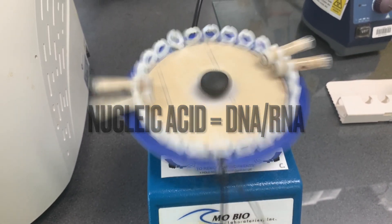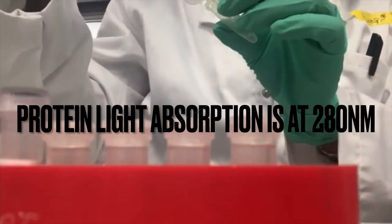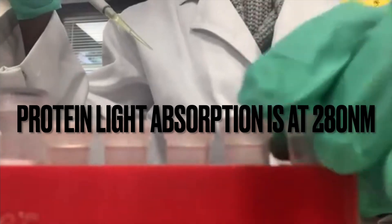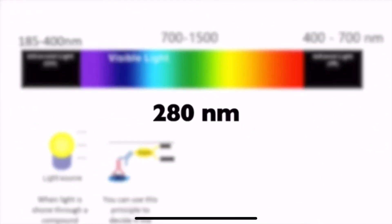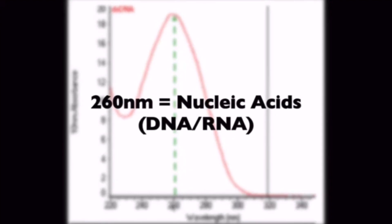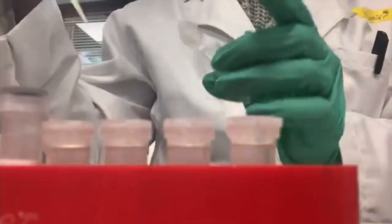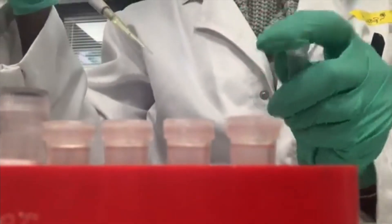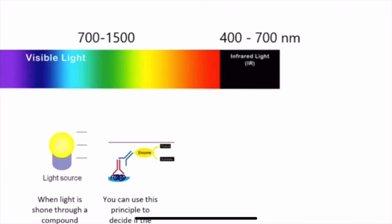There are two common optical-based technologies that can quantify nucleic acids. Using a spectrophotometer, you can select a specific wavelength where molecules absorb. For proteins, you select 280 nanometers, because most proteins contain the amino acid residue tryptophan, which absorbs at 280nm, making it a surrogate for protein quantity. For nucleic acids, absorbance at 260 nanometers is a good indicator of how much nucleic acid is in the sample.